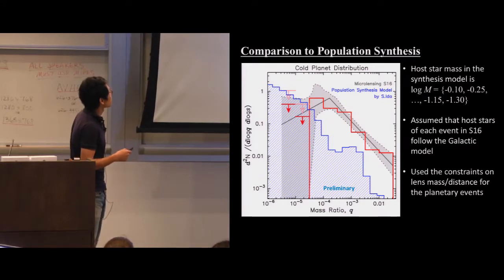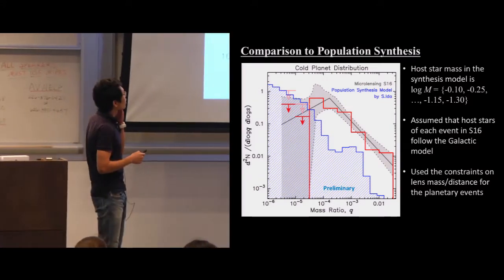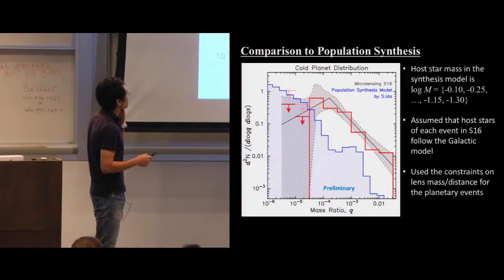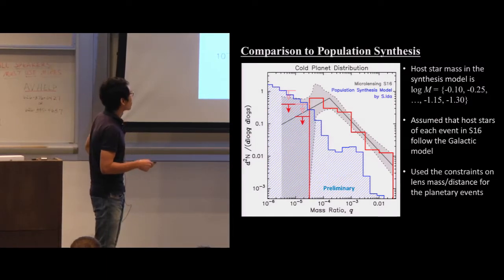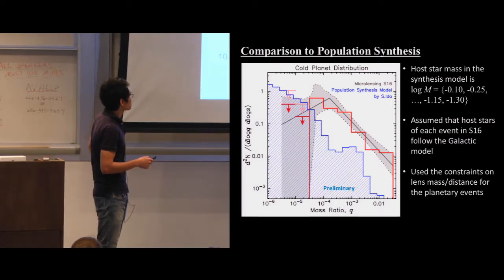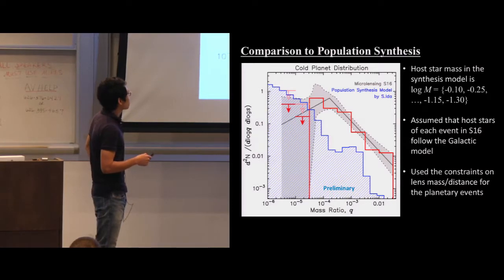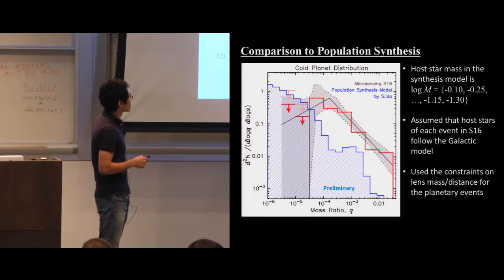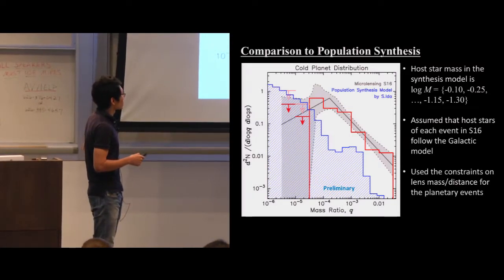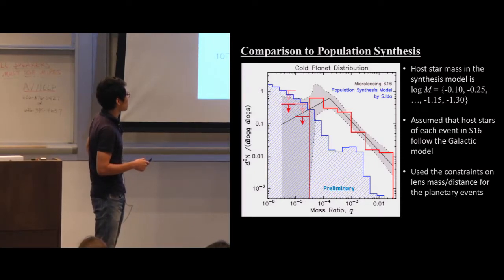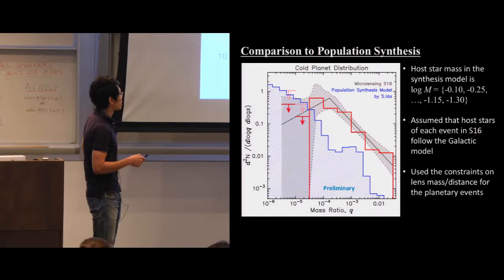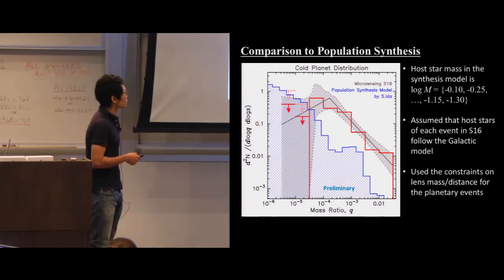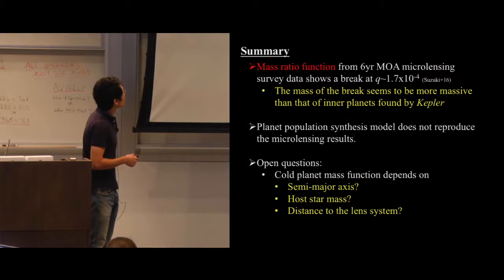Finally, comparing with population synthesis: we are collaborating with Ida-san, whose population synthesis model is optimized to produce cold gas giants and Neptune-mass planets. However, the model still underpredicts the number of planets compared to observation. This is a preliminary result, and we are working to understand what mechanisms or parameter tuning are needed in the planetary formation model.